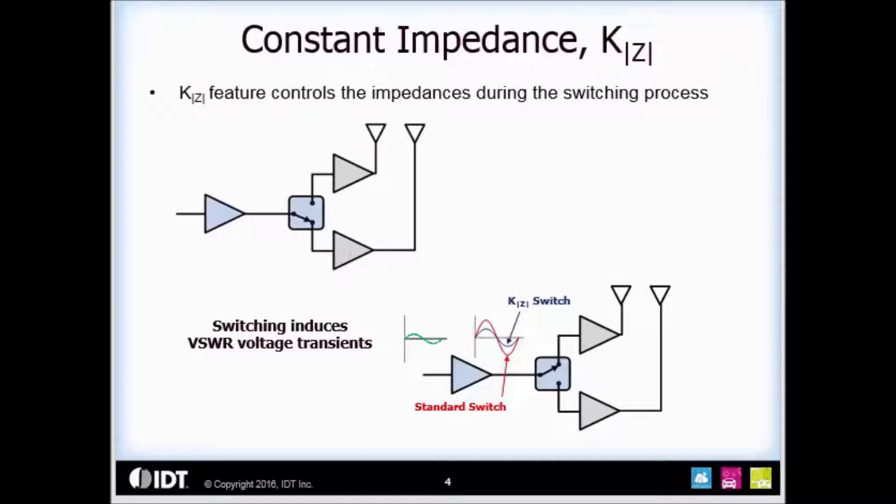Now let's take a look at the drawing on the lower right, which shows the RF paths have switched. The RF input is now connected to the upper RF output path. The standard or non-K|Z| switch does not control the impedance when switching RF ports. This can result in a large voltage wave standing ratio or VSWR transient shown in red. This could stress both the upstream and downstream components connected to the switch.